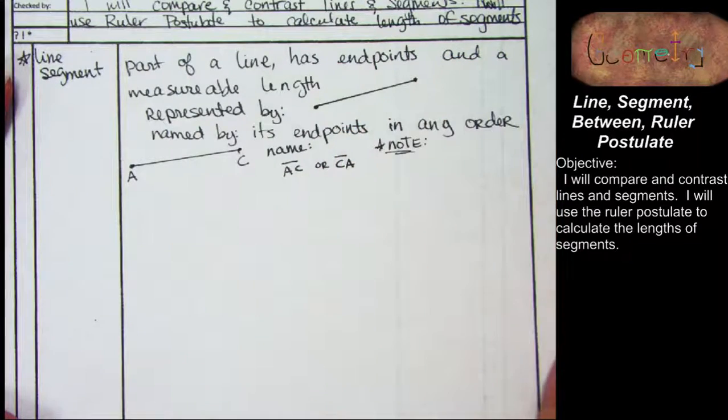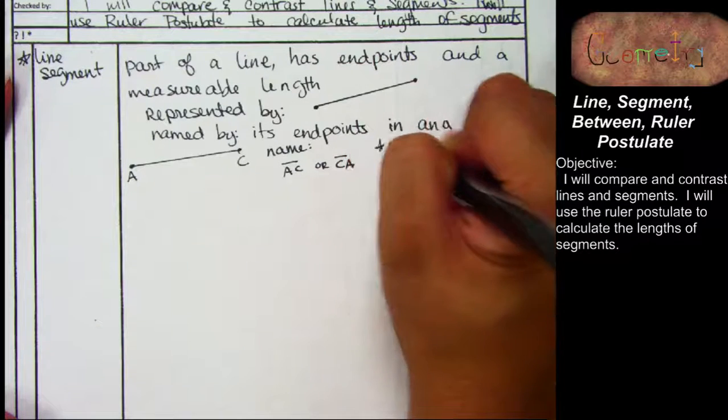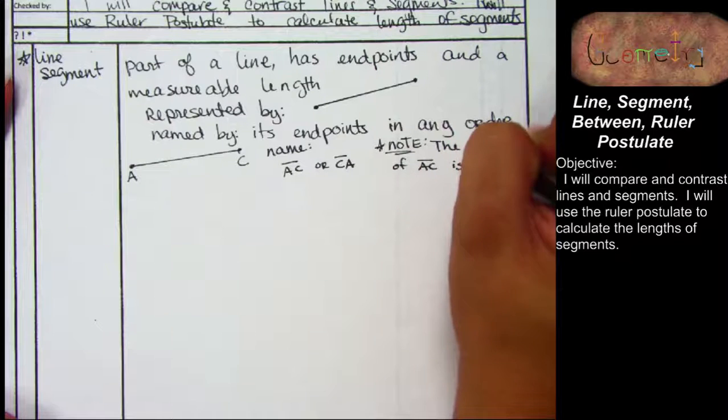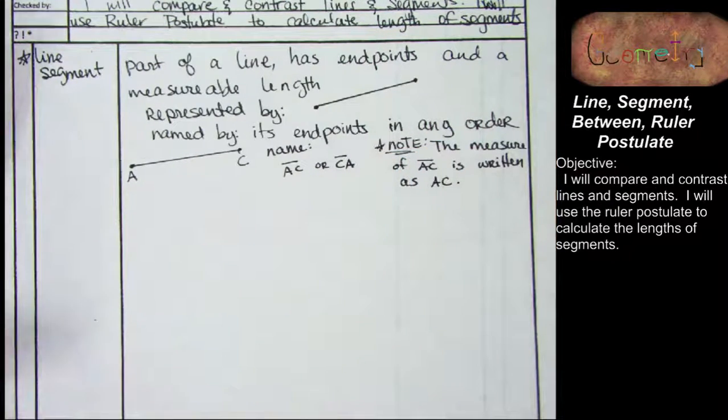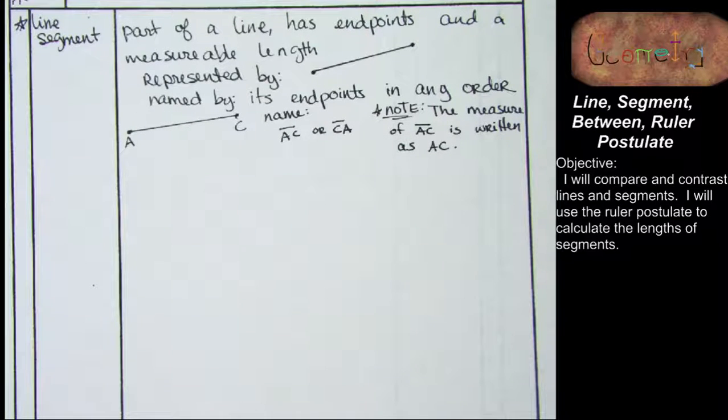We need to make a special note right here. This is the time to make this note. Because we can talk about the actual measure of a line segment, we have to have a good way to write it so that we're not writing the measure of line segment every single time. So we're going to write the name of the line segment, but we're going to leave off the little symbol for line segment above it. So now, if I ask you to name a line segment, and you forget the little bar on top, you didn't give me its name, you gave me its measure. So be really careful that you get those symbols on there, okay? Thank you.